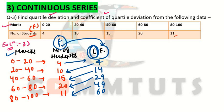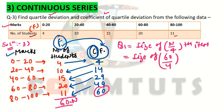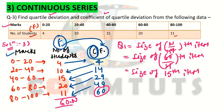The next step is to calculate Quartile 1 (Q1). The size of Q1 is N divided by 4. Here N equals 60, so 60 divided by 4 gives us the size of the 15th item. Now we check in our data which class the 15th item falls in.